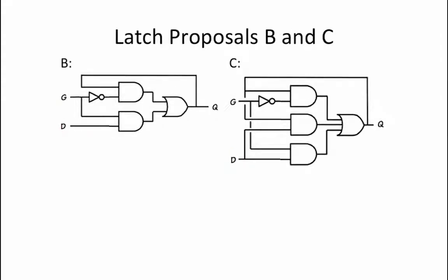Next, we take a look at proposals B and C. The logic equation for proposal B is q equals not g and q, or g and d. This is exactly the same logic equation that we specified for our latch. However, this implementation is not lenient because it does not guarantee that you will not see glitches on your output signal when g changes value.